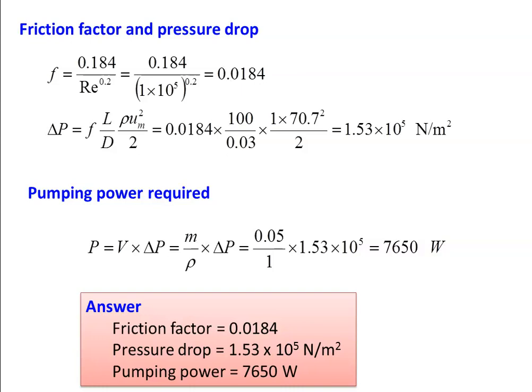Answers for Example 8: friction factor F = 0.0184, pressure drop ΔP = 1.53 × 10⁵ N/m², pumping power = 7650 W.